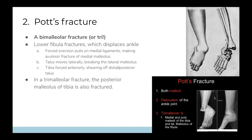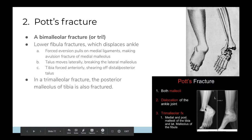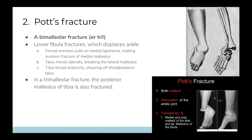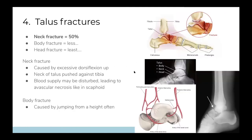In a Pott's fracture, the lower fibula is fractured, then eversion force breaks the medial malleolus, and the talus moves laterally, breaking the lateral malleolus. The tibia, with the malleoli gone, is forced anteriorly and damages the talus itself. Sometimes a trimalleolar fracture occurs where the posterior malleolus of the tibia is also fractured.